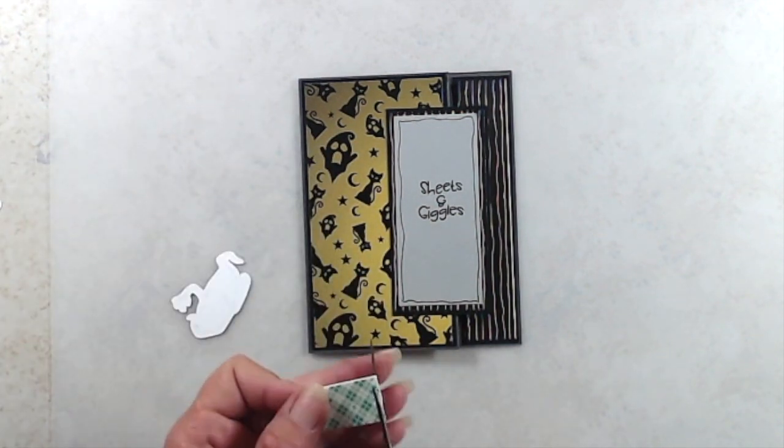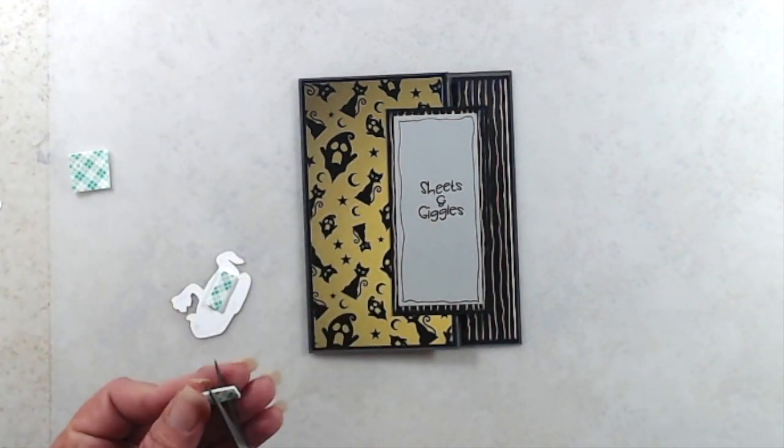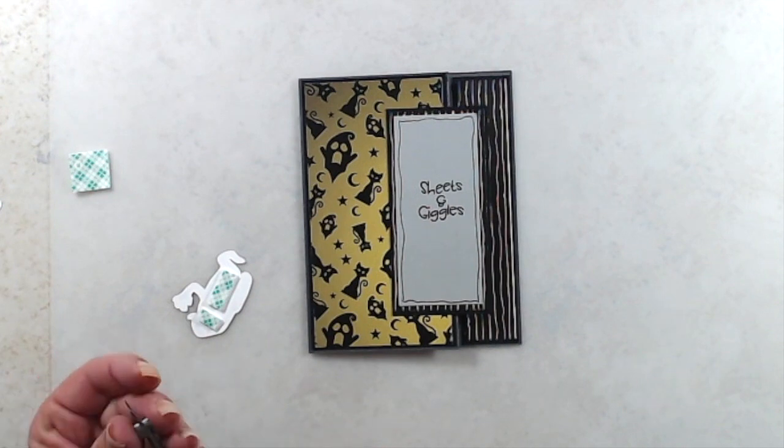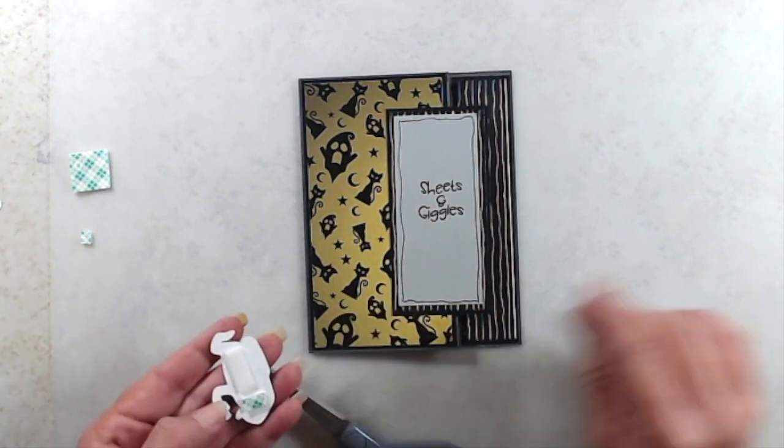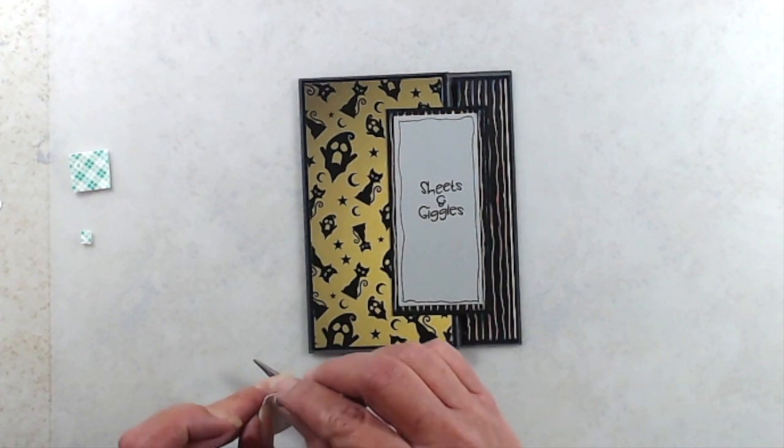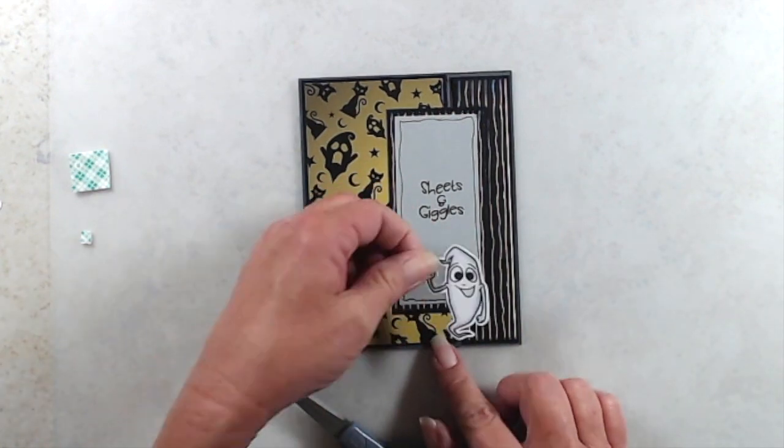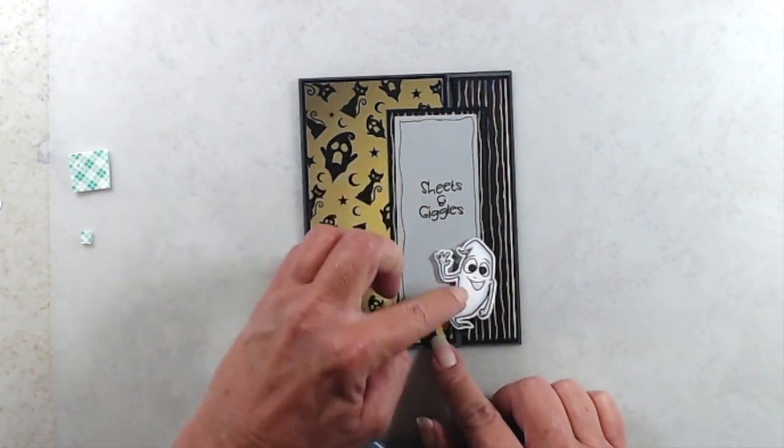And then for the ghosts, of course, I had to use some foam tape. And for the ghost on the bottom right, I made sure not to put foam tape on the right side of him, otherwise, again, I would have glued my card shut. Then I put the other two ghosts in place, and that finishes up card number one.